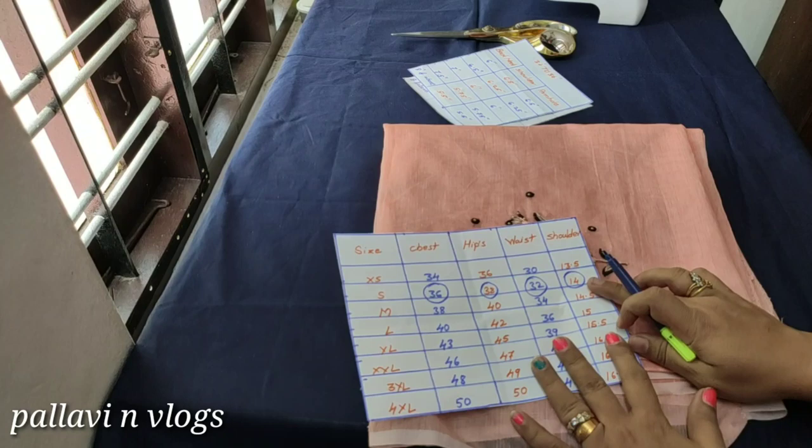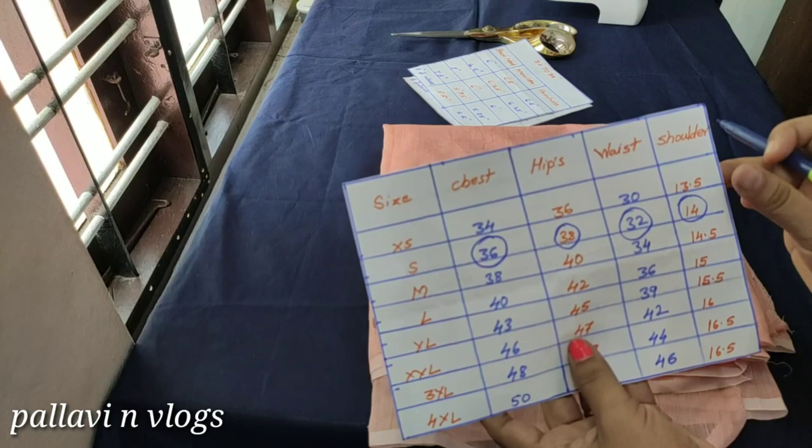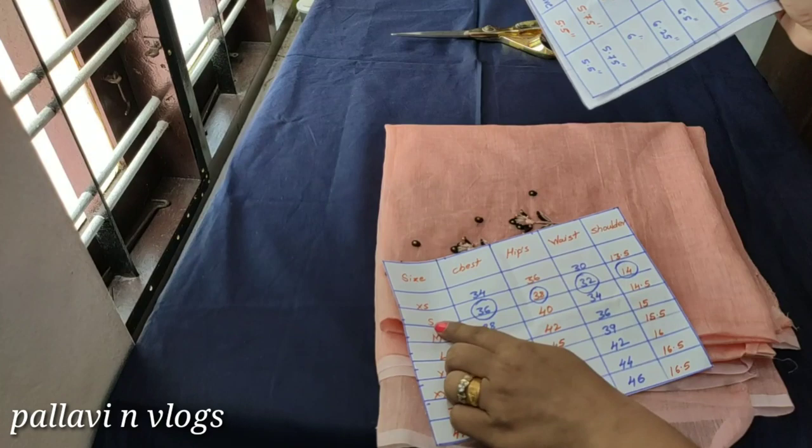I am going to select the neck according to 40 inches. If I have a short answer, that is correct. We will decide the shoulders according to the neck and chest. Now, let's go to the chart.